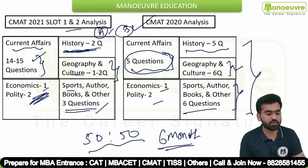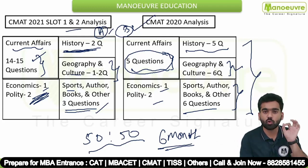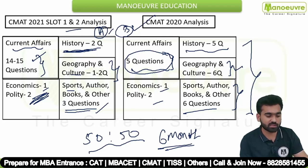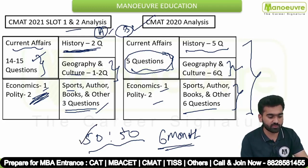That's why we have to do balanced preparation. We can expect 50 percent from current affairs and 50 percent from static affairs. So let's see some questions from 2021.